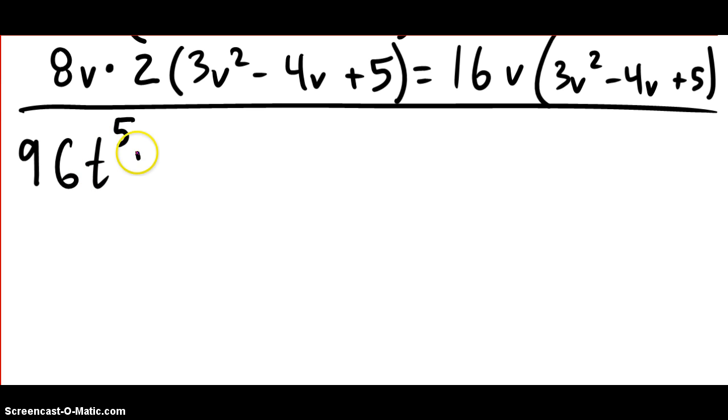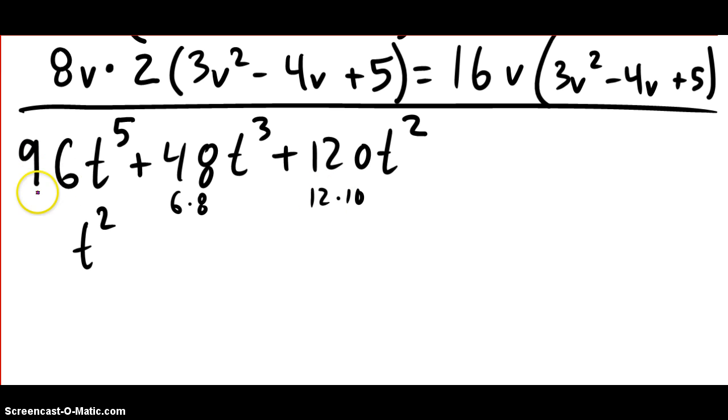96t to the 5th plus 48t cubed plus 120t squared. Go ahead and pause and try to factor this one. All right, so I'm going to work this one out. You can see that it's got a common factor of t squared. And I'm not sure what the common factor is here. This is what? This is 6 times, 6 times 8 here.